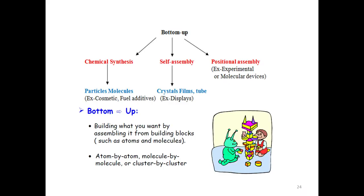The bottom-up approach can be done by three ways: chemical synthesis, self-assembly, and positional assembly. In chemical synthesis, we see particle molecules — for example, in cosmetic fuel additives. In self-assembly, these are seen in crystal films or tubes — for example, displays. In positional assemblies, examples include experimental or molecular devices.